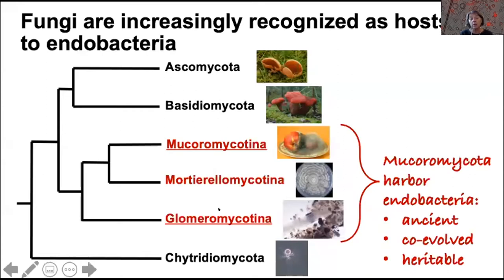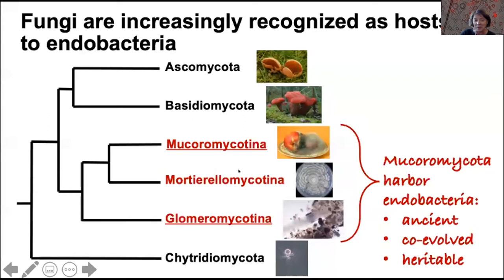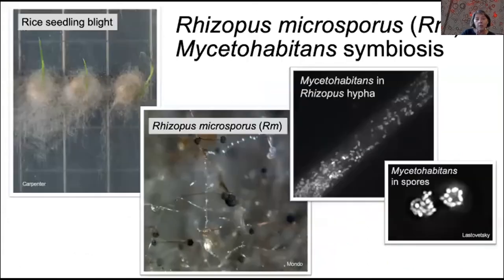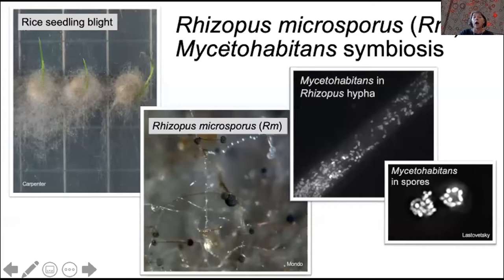Our lab studies glomeromycotina; endosymbionts of glomeromycotina are vascular mycorrhizal fungi. But today I'm going to talk about our work on endosymbionts of mucoromycotina, and Greg is going to tell you about endosymbionts of mortirellomycotina tomorrow. Our model system that we focus on is the rhizopus microsporus symbiosis with mycetohabitans.